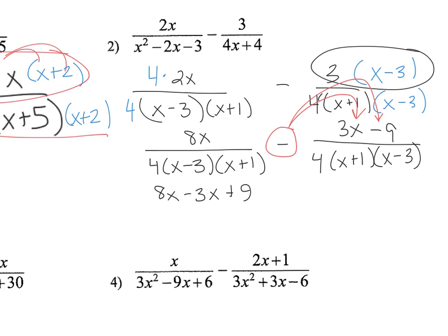Don't forget to take the opposite sign to the second term as well, which turns into 5x plus 9 over — and my denominator stays the same — 4 times x minus 3 times x plus 1.